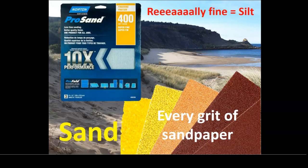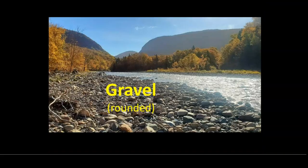When you drop down to the point where you can't really see the particles anymore, but they're still bigger than clay, you jump into a category halfway between sand and clay called silt. It's about equivalent to 400 or higher grit sandpaper — basically you can't feel it at all. You can barely see it; it looks like mud, but if you squint you can see tiny little dots.